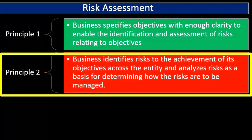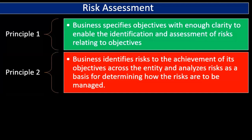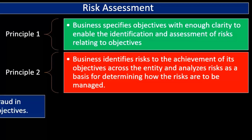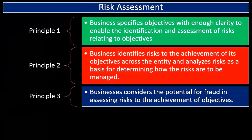Principle number two: the business identifies risks to the achievement of its objectives across the entity and analyzes those risks as a basis for determining how they are to be managed. Once we understand what the risks are, we can see them across the organization and come up with a plan to deal with and mitigate those risks.